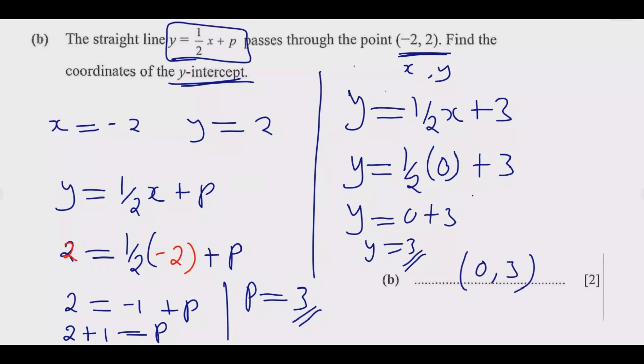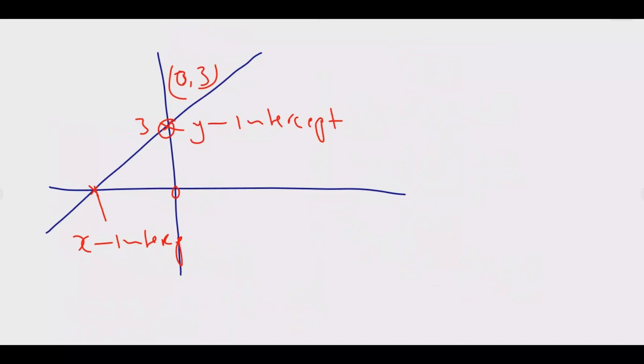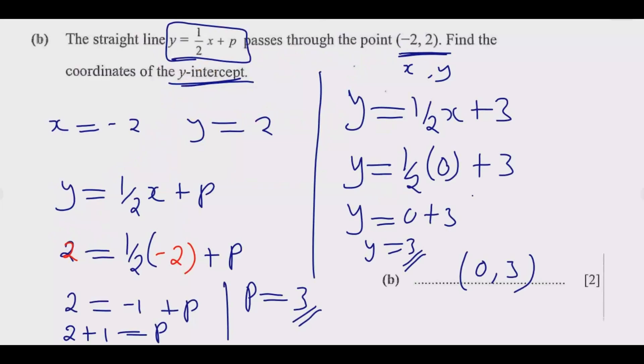That's what it means. Well, the equation itself, this equation is y = ½x + 3, because what we needed to find is the p. That's why we are given this. Once we find p, that p itself is the y-intercept. The y-intercept is happening at (0, 3). So once you do this, you are good to go and you get the full marks.